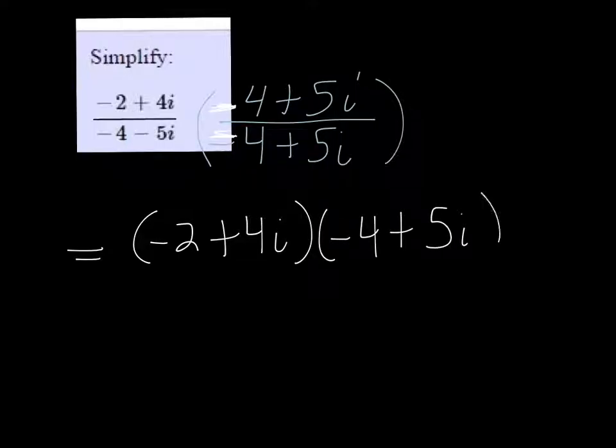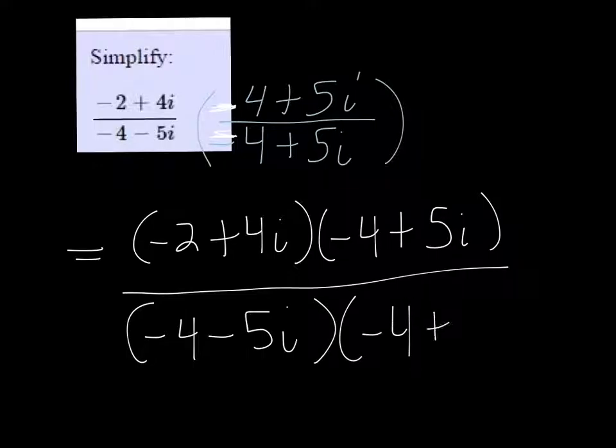And the bottom, negative 4 minus 5i times negative 4 plus 5i.